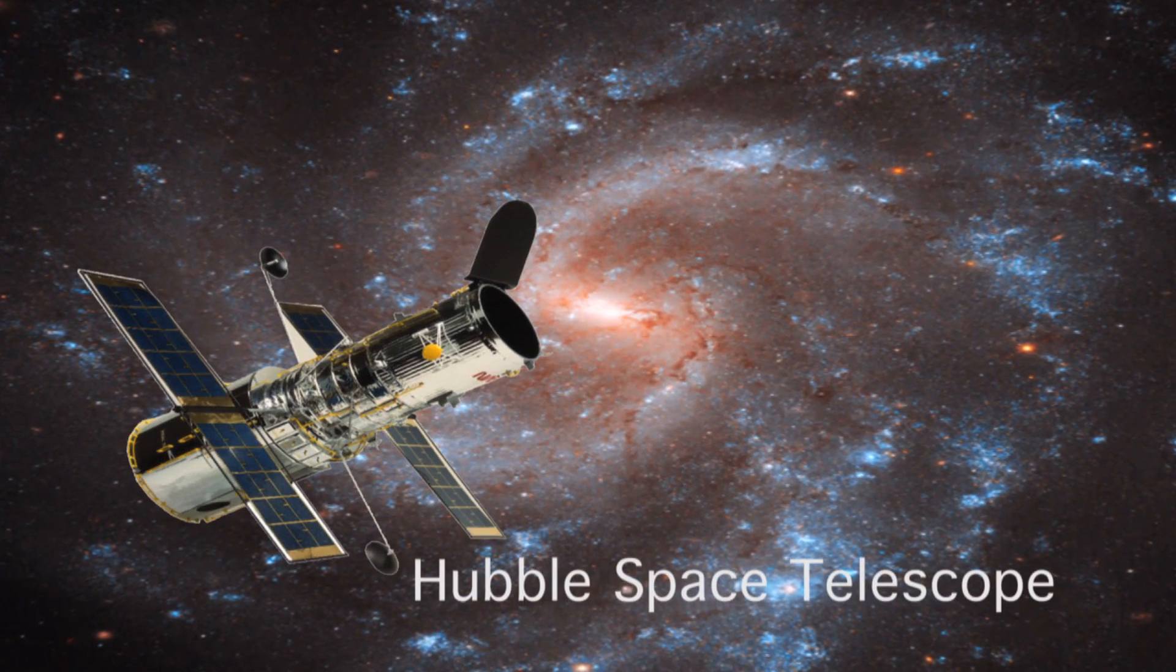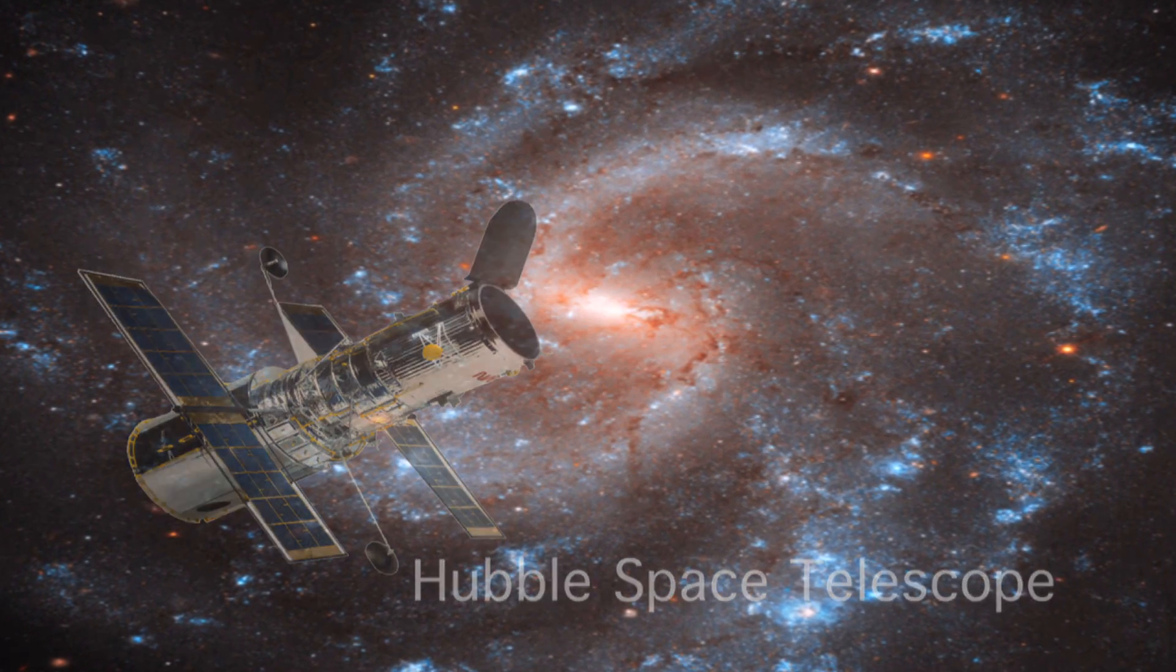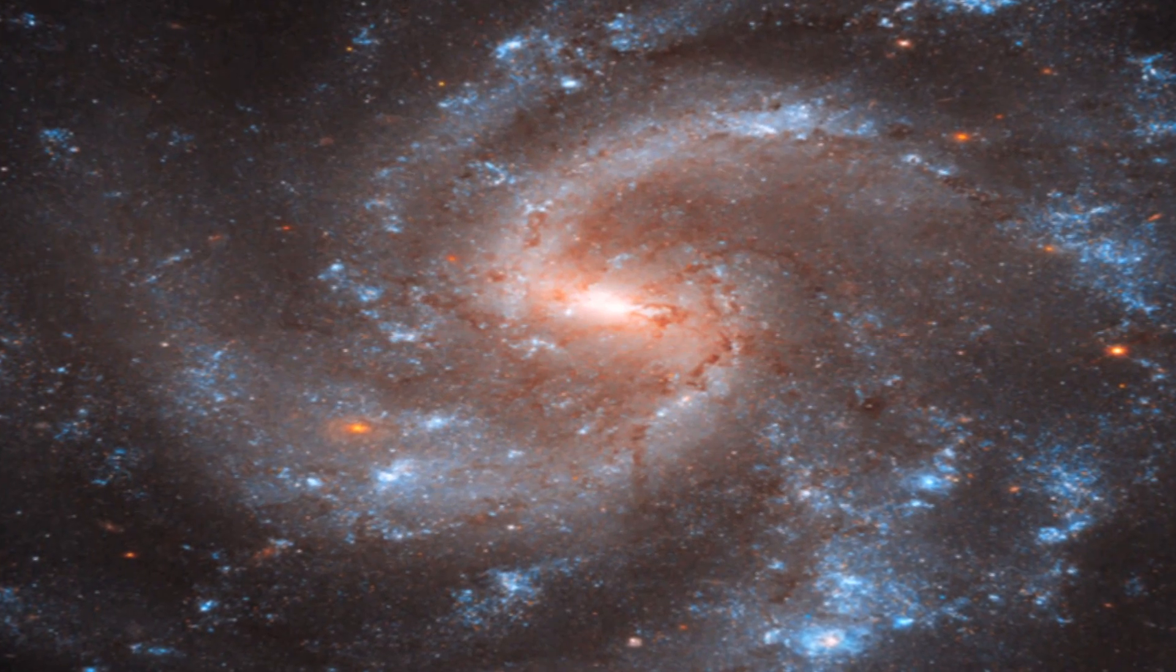Observations with six different space-based telescopes, including the Hubble, suggest that the light-stealing culprit is a rapidly moving stream of curdled gas hiding NGC 5548's core.